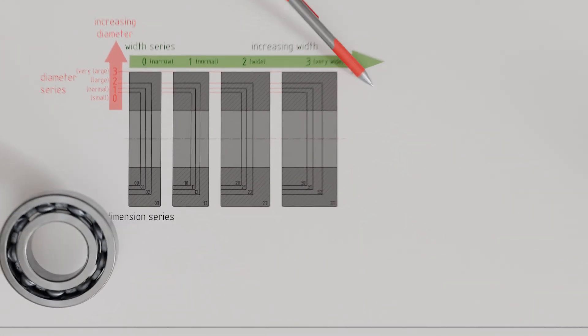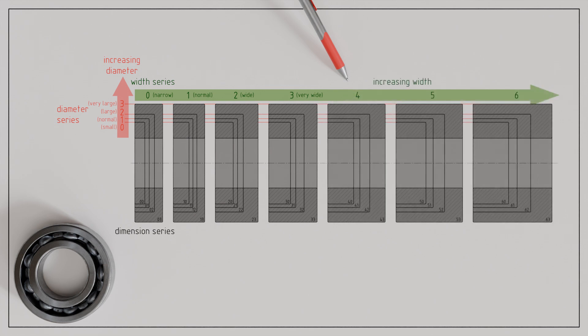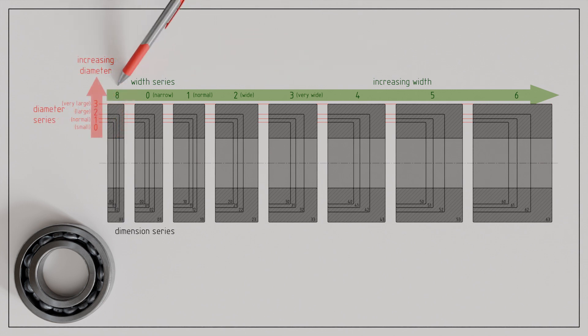In fact, besides the width series presented so far, there are additional variants. In later standard revisions, width series 4, 5, and 6 were introduced, which are intended for especially wide bearings. At the same time, extremely narrow bearings were added. Since the original standard already began with width series 0 as the narrowest bearing at that time, these particularly narrow bearings were designated as width series 8.